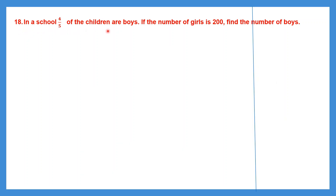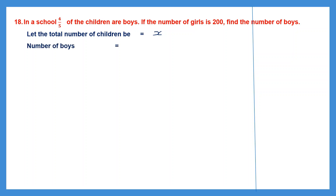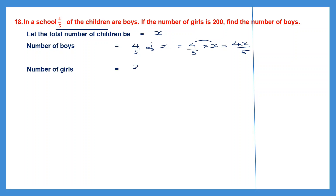Question 18. In a school, four-fifths of the children are boys. If the number of girls is 200, find the number of boys. Let the total number of children be x. The number of boys is 4/5 of x, which is 4x/5. The number of girls is given as 200. So we have x total children, 4x/5 boys, and 200 girls.